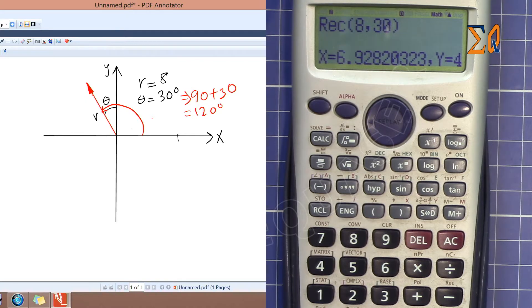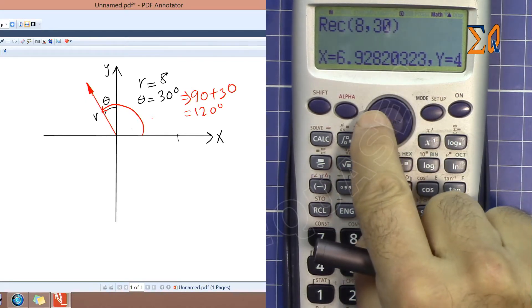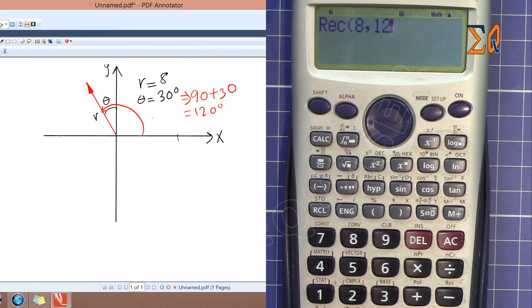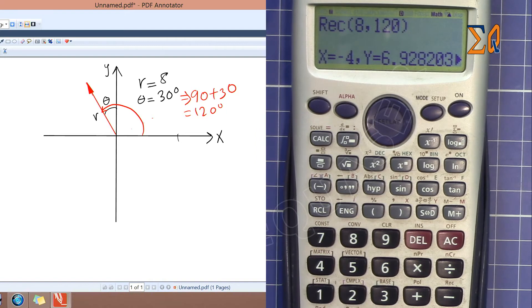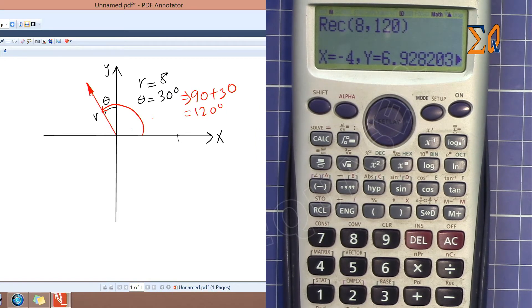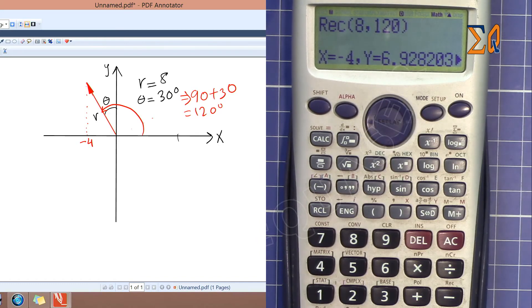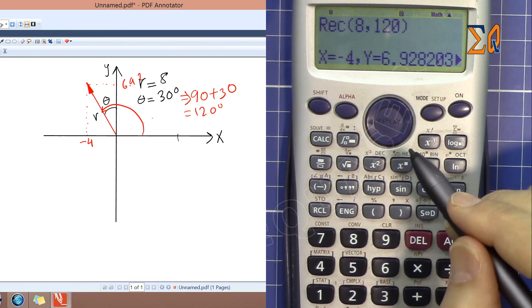So now let's enter that. I'm just editing it by left arrow, press this and 120, close it. Now you will get a proper X is minus 4 and then Y is 6.92, which is correct answer.